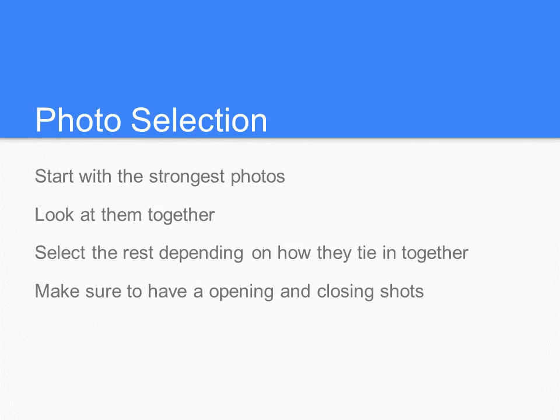For photo selection, like Kristaline said, start with the strongest photos and then pull in all the related photos and look at them together. One thing to remember: when you are looking at all your strong photos, if there is one that does not quite fit in the story, don't be afraid to cut it — because you will probably use it later for social media or wherever you need one really strong standalone photo.